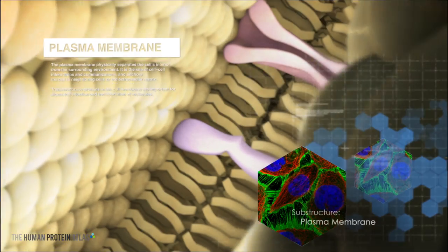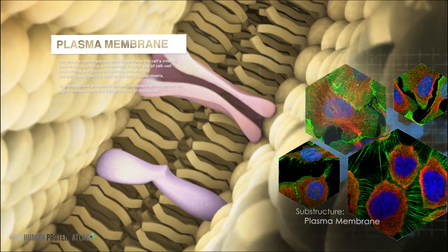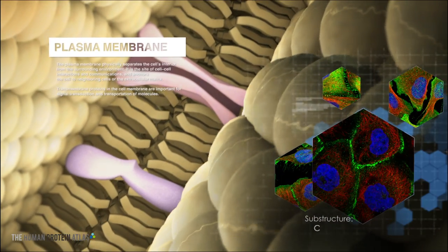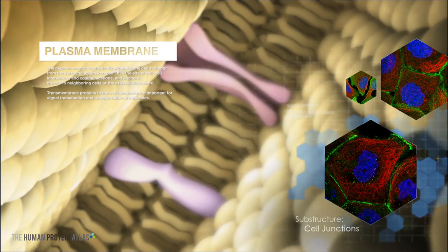The plasma membrane encloses the cell. By creating a physical barrier, it separates the cytosol and organelles of the cell from the surrounding environment. This is the site of cell-to-cell interaction and communication and anchors the cell to its surroundings.